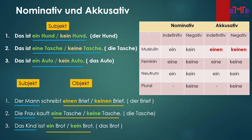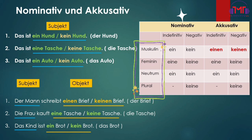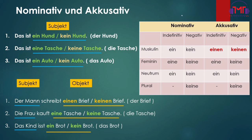In the case of the nominative case, there is an indefinite article and a negative article in the column. In the article, there is masculine, feminine, neutral, and plural. This is the form. If you have a nominative case, it is a form.